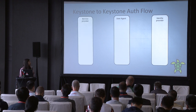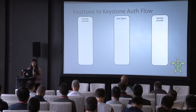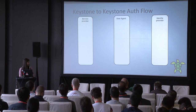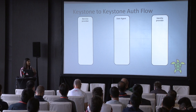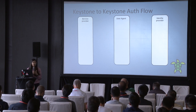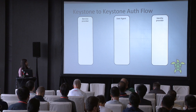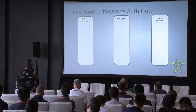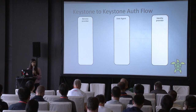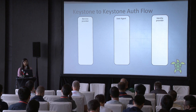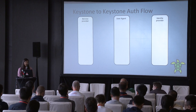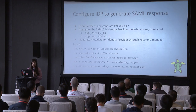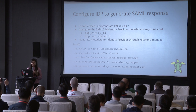For Keystone, there is a user agent, identity provider, and service provider. The user starts by authenticating with the identity provider. Keystone follows a one-sided trust relationship: the identity provider does not take requests directly from the service provider — only the service provider knows the identity provider. The user is aware of both the service provider and the identity provider, whereas the identity provider does not directly interact with the service provider.